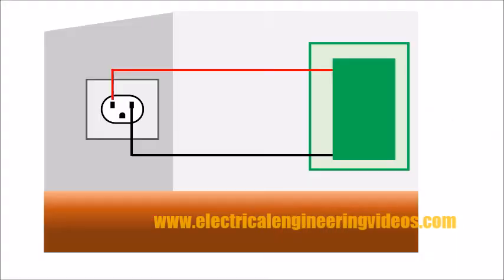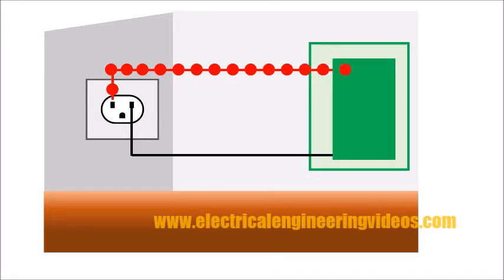In its simplest meaning, a neutral is a return path. Current flows from the HOT, moves into the device, and flows back to the neutral terminal. The figure above displays current as red dots that move from the red HOT, pass through the device, and come back to the black neutral.